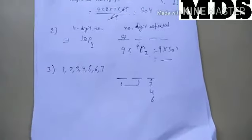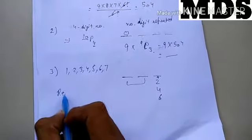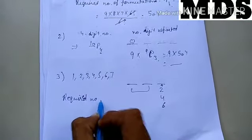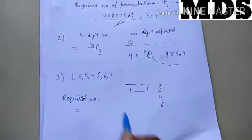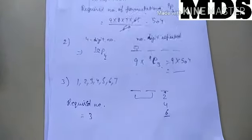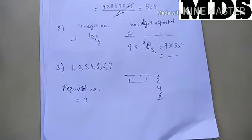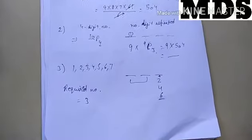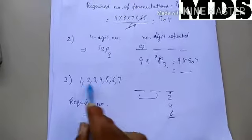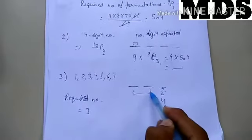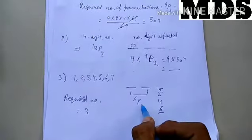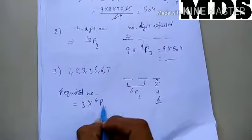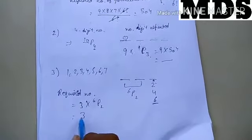Even numbers mean we get a 2, 4, or 6 at the units place. So at the units place we have 3 choices. The remaining 6 digits can fill the other two positions, so we choose 2 from 6, giving 6P2.